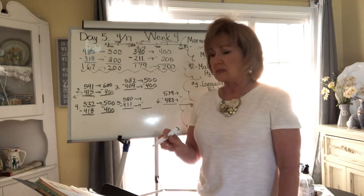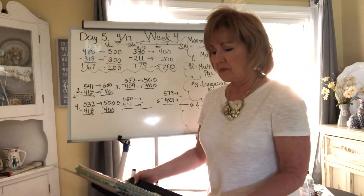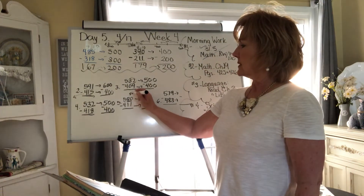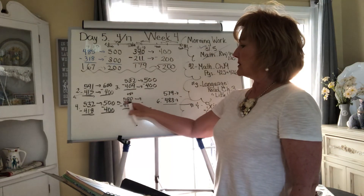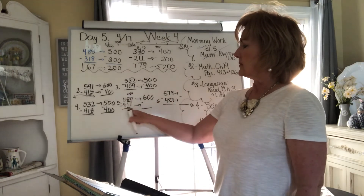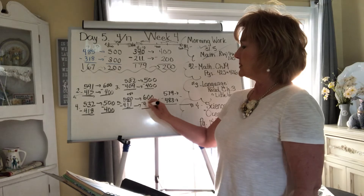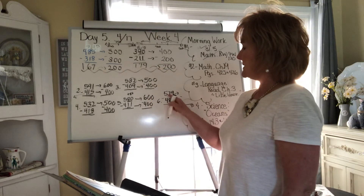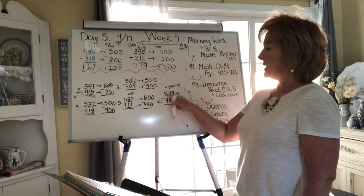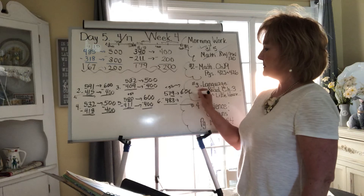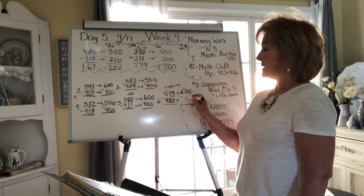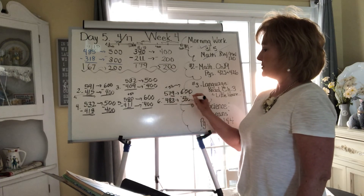Number five: 580 — 80 is definitely greater than 50, so it rounds up to 600. 411 — 11 is less than 50, it rounds down to 400. 579 — that's greater than 50, so it rounds up to the next hundred. 483 — definitely greater than 50, so it rounds up to the next hundred, which would be 500.